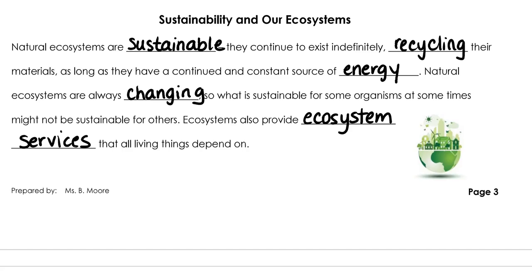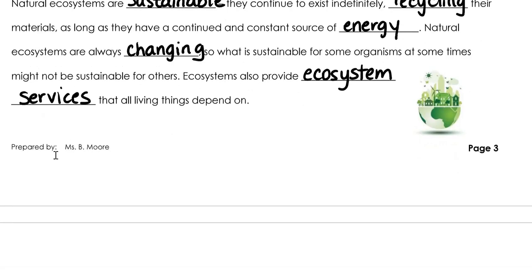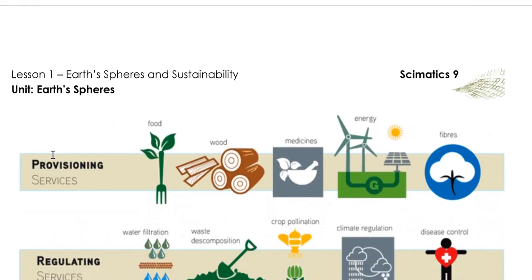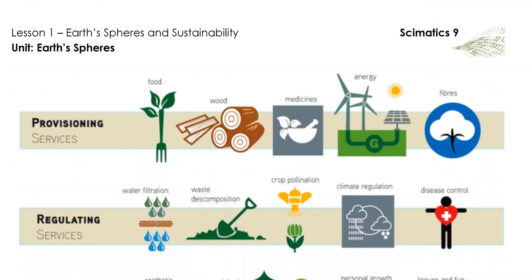Provisioning services are the products obtained from ecosystems such as food, fresh water, wood, fiber, genetic resources, medicines — anything that can be harvested from or taken from our natural environment to ensure our survival.